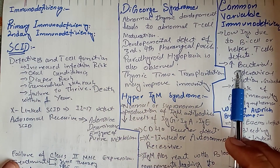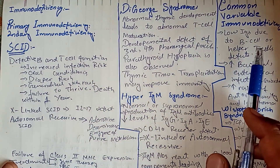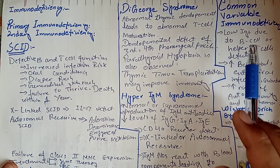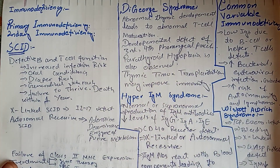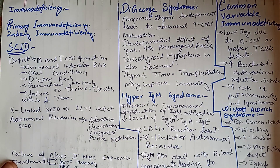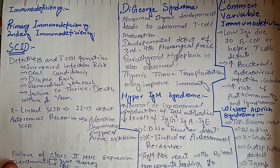Common Variable Immunodeficiency is characterized by low immunoglobulins due to B cell or helper T cell defect. Bacterial and enteroviral infection risks are increased, and it can also lead to autoimmunity or lymphoma.